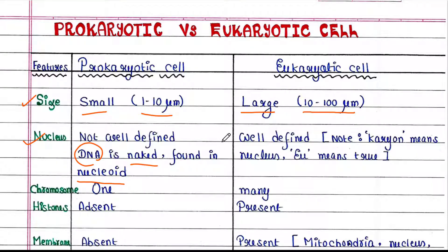In eukaryotic cells, the nucleus is present. It is very well defined. Here, one thing I need to mention: karyon means nucleus.